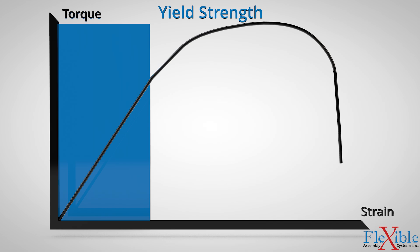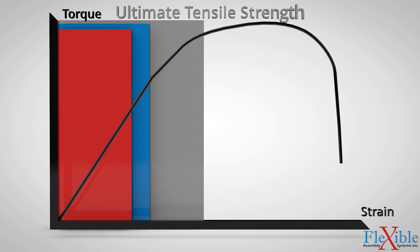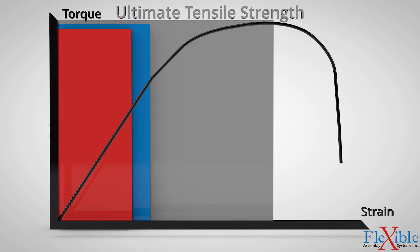The yield strength of a fastener is the point of stress which the material it is made from starts to deform permanently. The proof load of the fastener is its usable strength where it will return to its original shape once the load is removed. This is typically 85-95% of the yield strength. The ultimate tensile strength is where the fastener is pulled to the point of breaking and fracturing. This is where the fastener will fail completely.